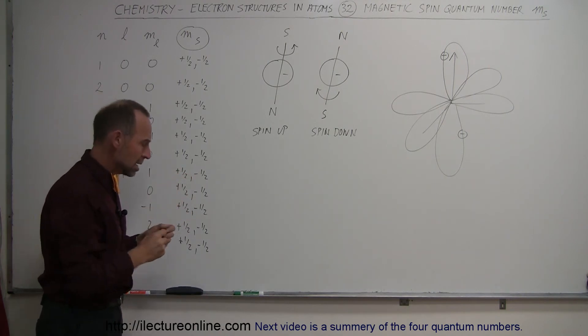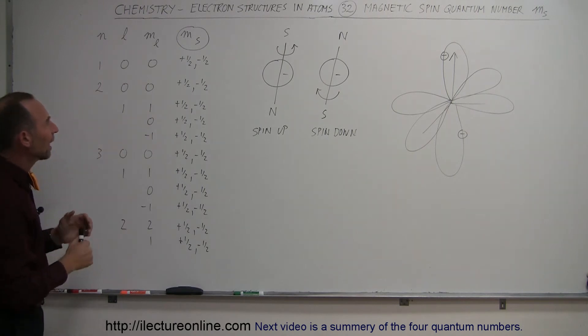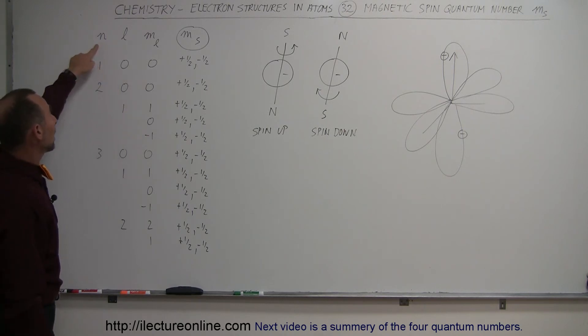What we find then is that each electron is now associated with four quantum numbers. The electron is associated with what energy level it's at.